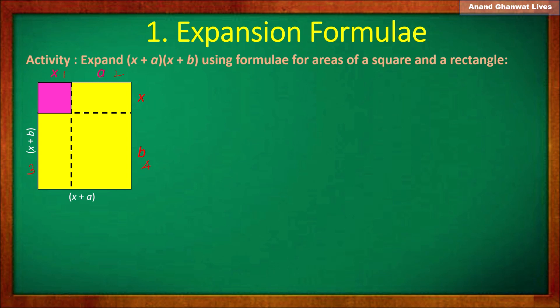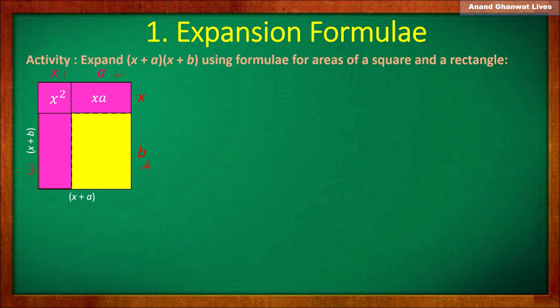The first part has length x and breadth x, so it is a square and its area is x². The next part is a rectangle with length a and breadth x, so its area is ax. The third part is a rectangle with length a and breadth b, so its area is ab.